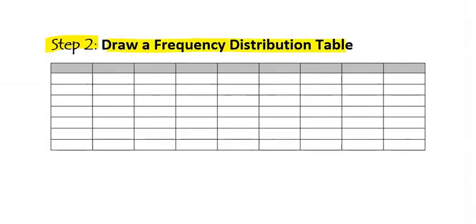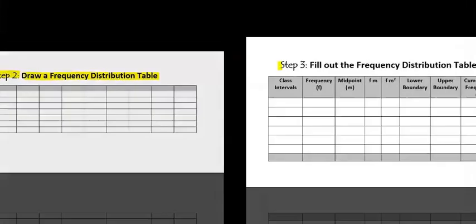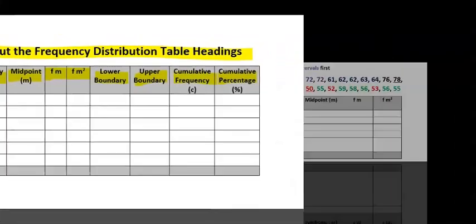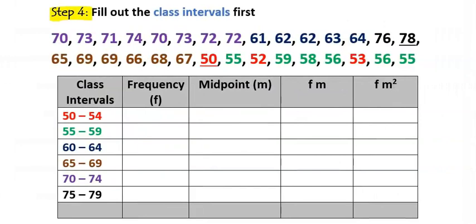After considering the class interval, step two is to draw a frequency distribution table. Step three: fill out the frequency distribution table headings — class interval, frequency, midpoint, frequency times midpoint, and frequency times midpoint squared. However, in step four, we only need class interval, frequency, fm, and fm² for variance and standard deviation of grouped data.